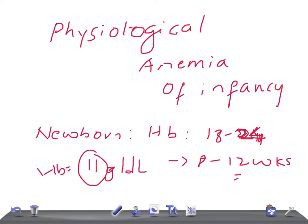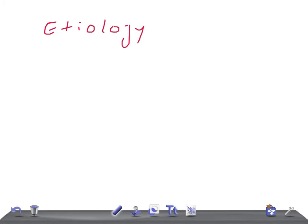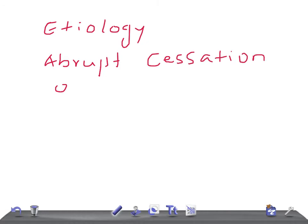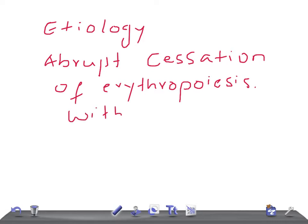It's known as physiological because the etiology for this anemia is the abrupt cessation of erythropoiesis with the onset of respiration. Erythropoiesis, as you know, refers to red blood cell production. With the onset of respiration at birth, erythropoiesis abruptly stops, contributing to the drop in hemoglobin.